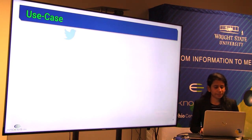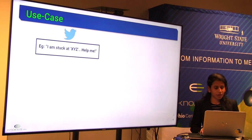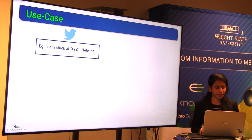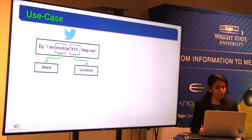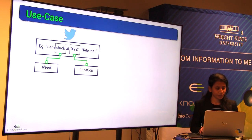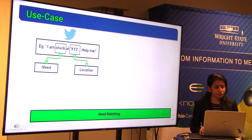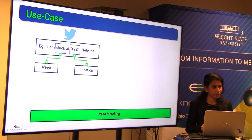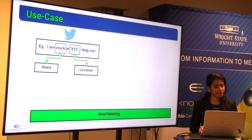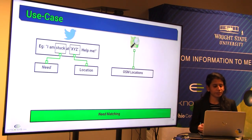We'll start with a use case to explain our problem better. From Twitter, we get text messages like: 'I'm stuck at XYZ, help me.' The nuggets of information that can be extracted from these are needs and location. For example, 'stuck' is the need, and 'XYZ' is the location.